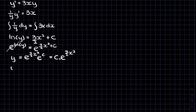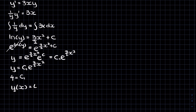So now we have y equals c1·e to the (3/2)x², and this is our general solution. But we have an initial value problem, so we need to plug in y equals 4 and x equals 0 to find c. If y equals 4 and x equals 0, that term will just go to 1 and we'll be left with c equals 4. So our specific solution is y(x) equals 4·e to the (3/2)x².